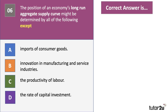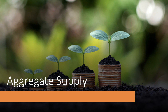The answer is A — imports of consumer goods. Imports of capital goods might affect countries importing technology, but imports of consumer goods affect aggregate demand (AD = C + I + G + X − M) rather than supply. The other three options — innovation, productivity, and investment — do impact on long run aggregate supply.